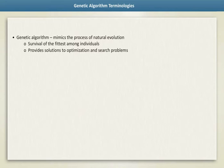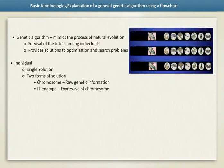GA is based on an analogy with the genetic structure and behavior of chromosomes within a population of individuals. Let us understand the basic terminologies in genetic algorithm.